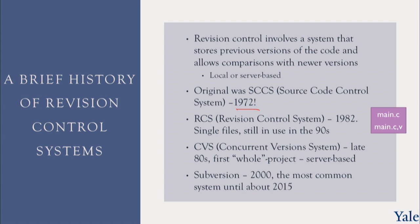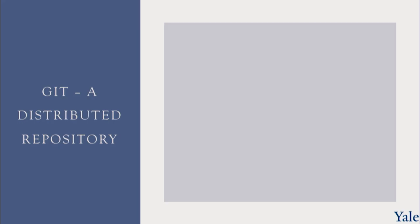Subversion started around 2000 and was the most common system until about 2015. It fixed many of the problems with CVS and was the first really user-friendly revision control system that non-expert programmers could actually use. But the reality is that the winner now, the most common one, is Git.